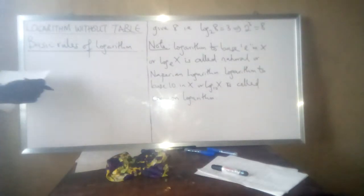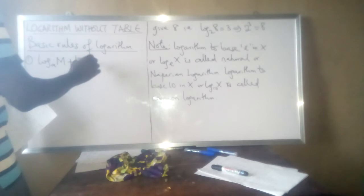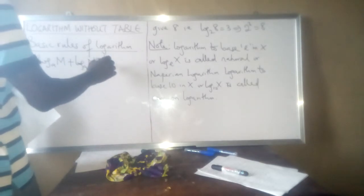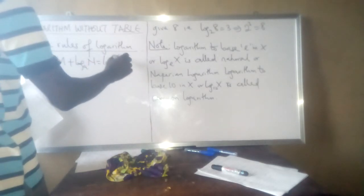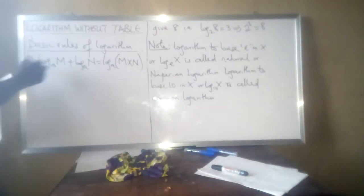The first one is multiplication. Log m base a plus log n base a will be equals to log to base a, m times n. When you are adding two logarithms together, you could express that as a product of the logarithms. That is why we call it multiplication law.